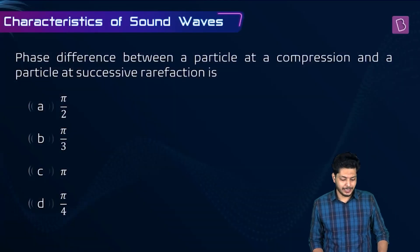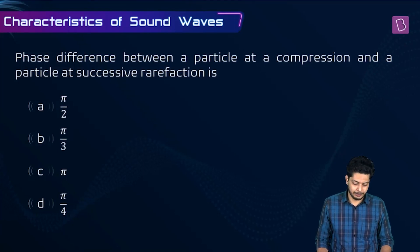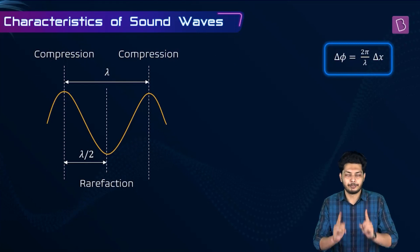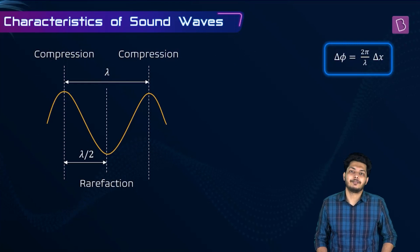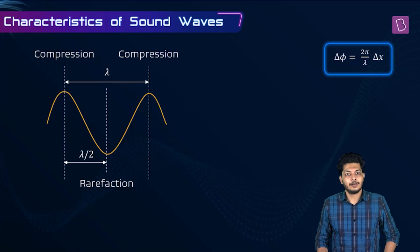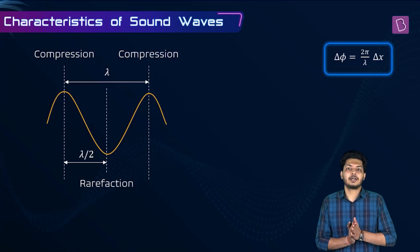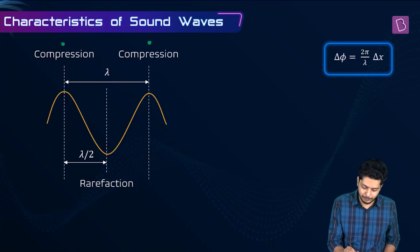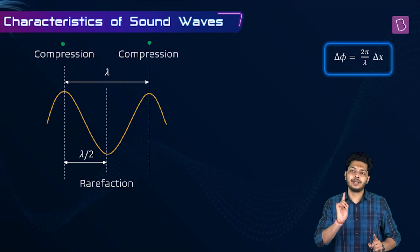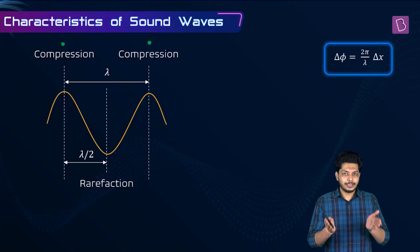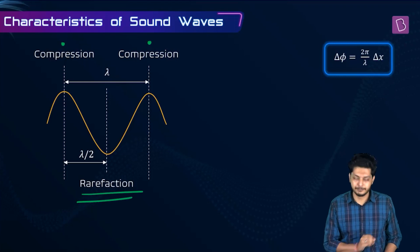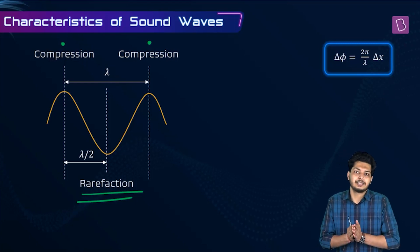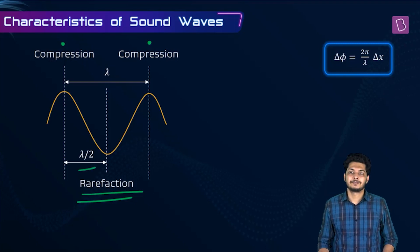The phase difference between a particle at a compression and a particle at a successive rarefaction is asked — options are π/2, π/3, π, or π/4. Between two successive compressions or rarefactions, the distance is one wavelength λ. Between a compression and a successive rarefaction, the distance is λ/2.